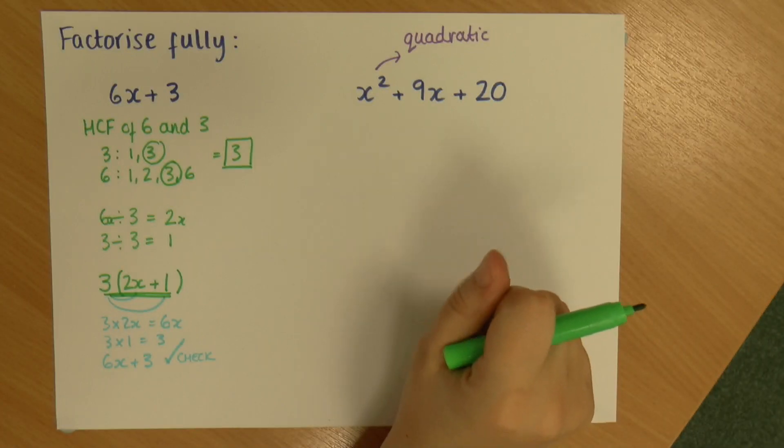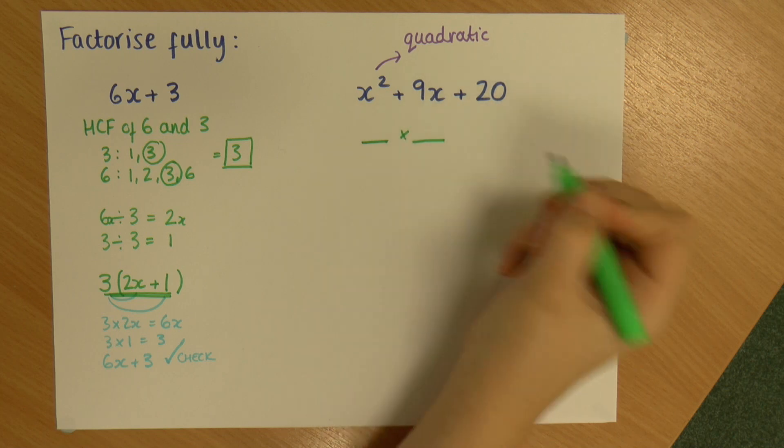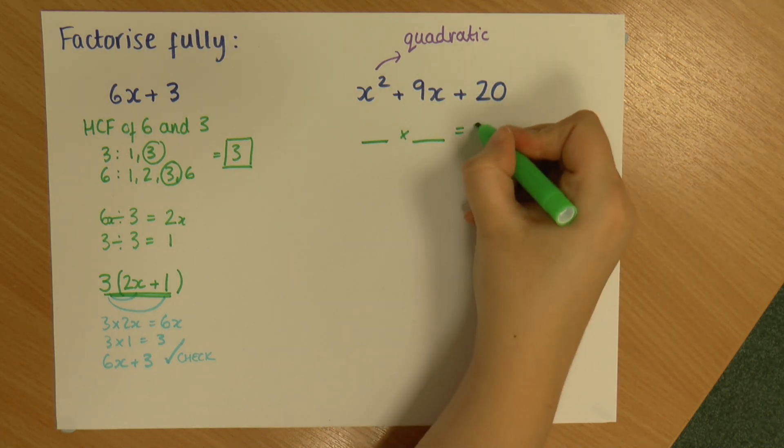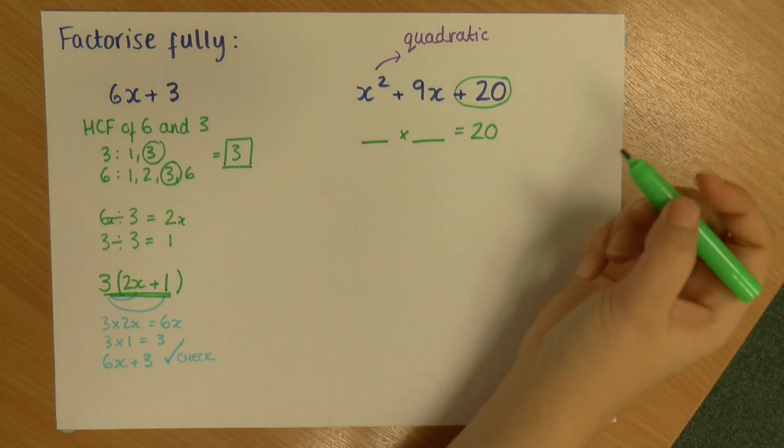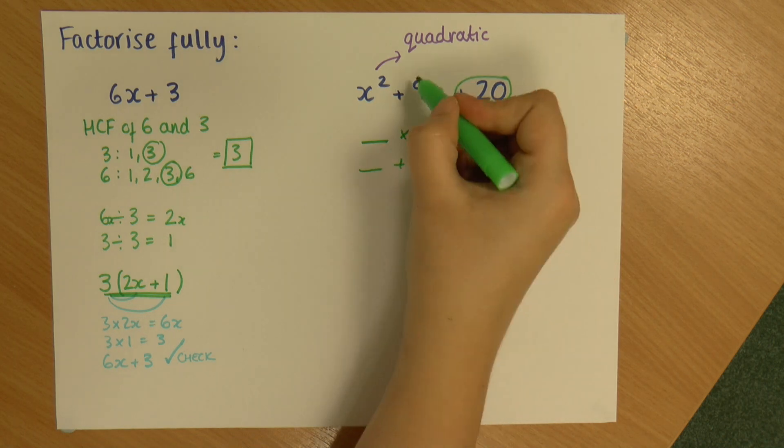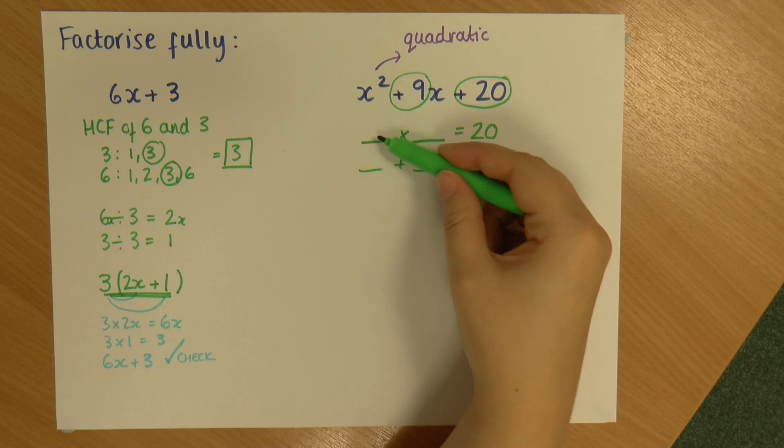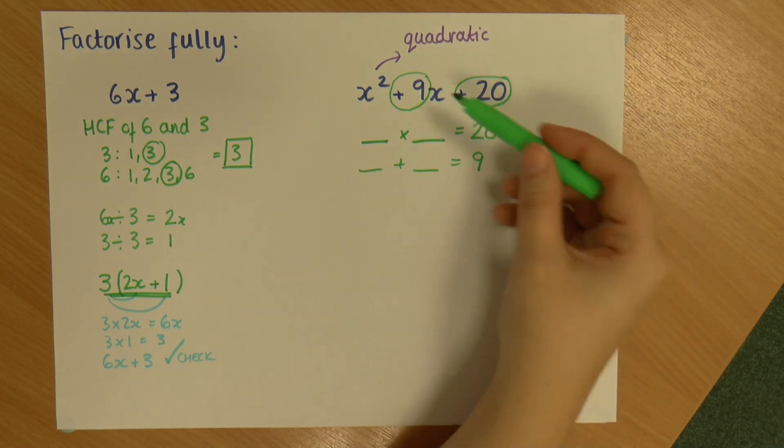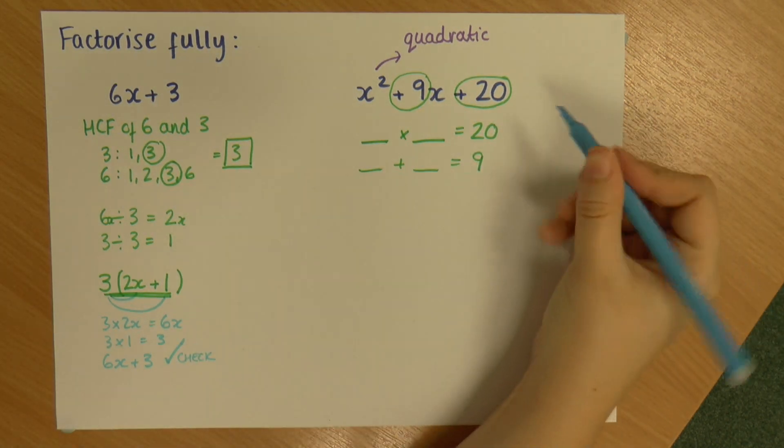Instead we use a little trick, and what we say is we look for two numbers that multiply to give us this end number and add to give us the middle. So two numbers that multiply to give us 20 and add to give us 9. So let's have a think about numbers that multiply to give us 20.